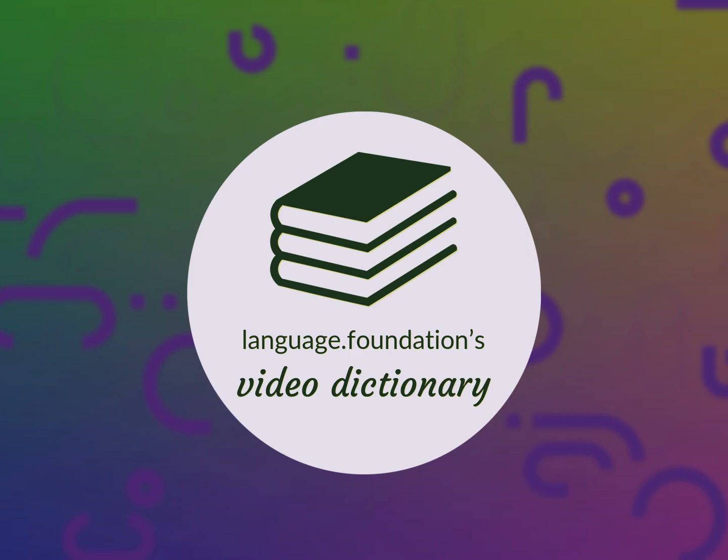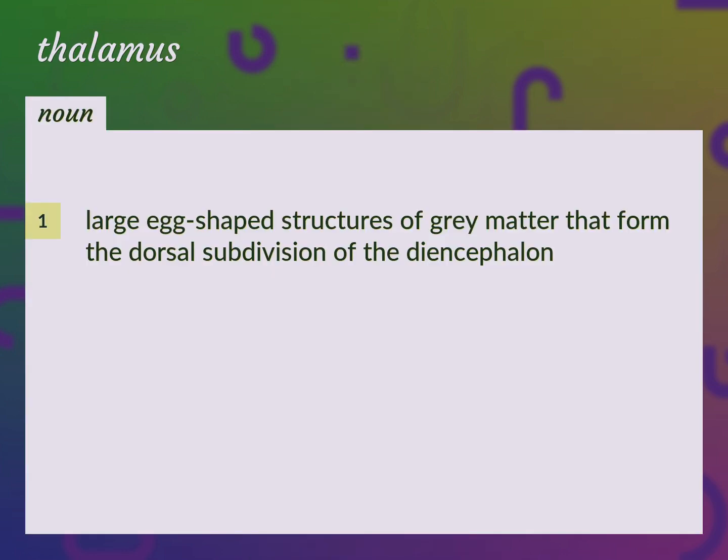Language.Foundation's Video Dictionary — helping you achieve understanding. Large egg-shaped structures of gray matter that form the dorsal subdivision of the diencephalon.